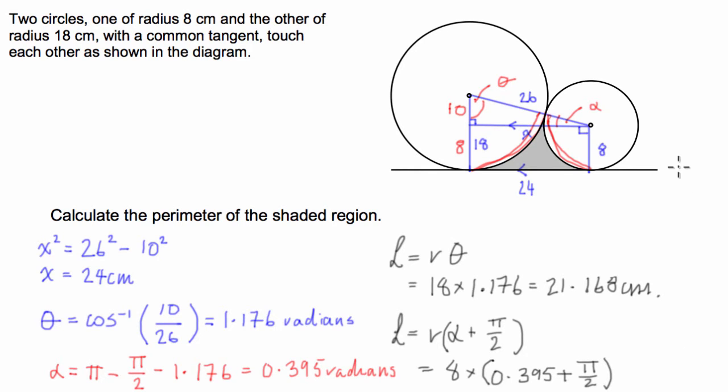So we're going to go, that's equal to 8 times alpha, which we calculated to be 0.395 plus pi over 2. And if you put that into your calculator, you'll end up with 15.726, 15.726 centimetres. Okay.